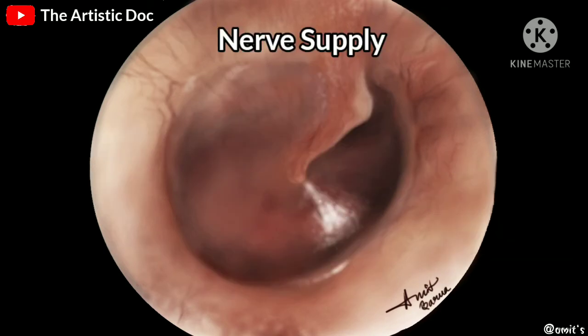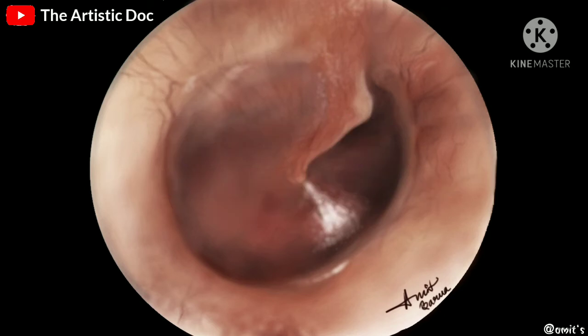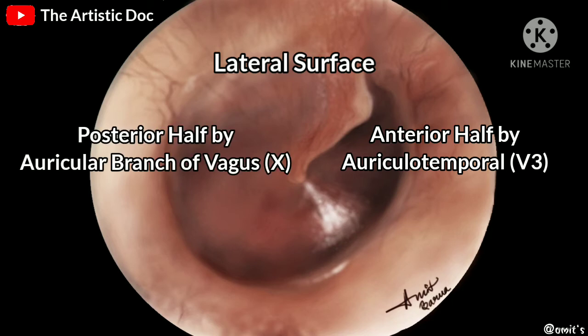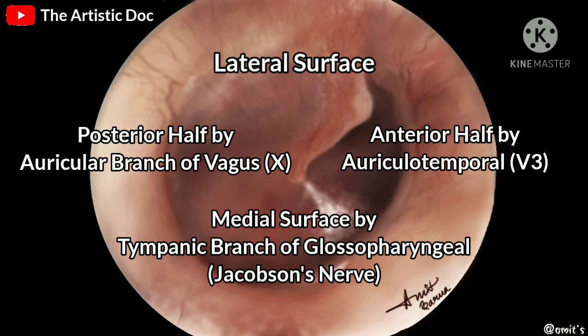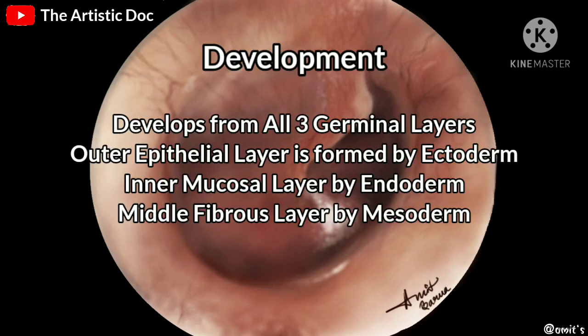The tympanic membrane is supplied by three nerves: the auriculotemporal nerve, the auricular branch of the vagus nerve, and Jacobson's nerve. The anterior half of the lateral surface is supplied by the auriculotemporal nerve. The posterior half of the lateral surface is supplied by the auricular branch of the vagus.